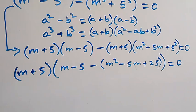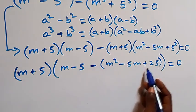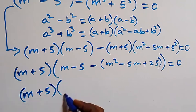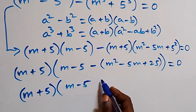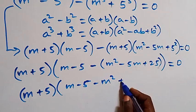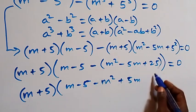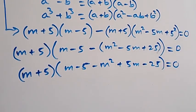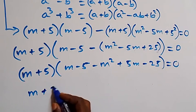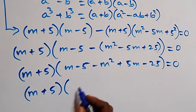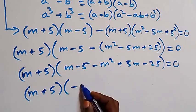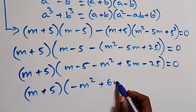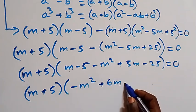When we simplify by opening the inner bracket with the minus sign, this becomes m plus 5 times the open bracket: m minus 5, minus m squared plus 5m minus 25. Rearranging, we have m plus 5 times negative m squared plus 6m minus 30, equals zero.